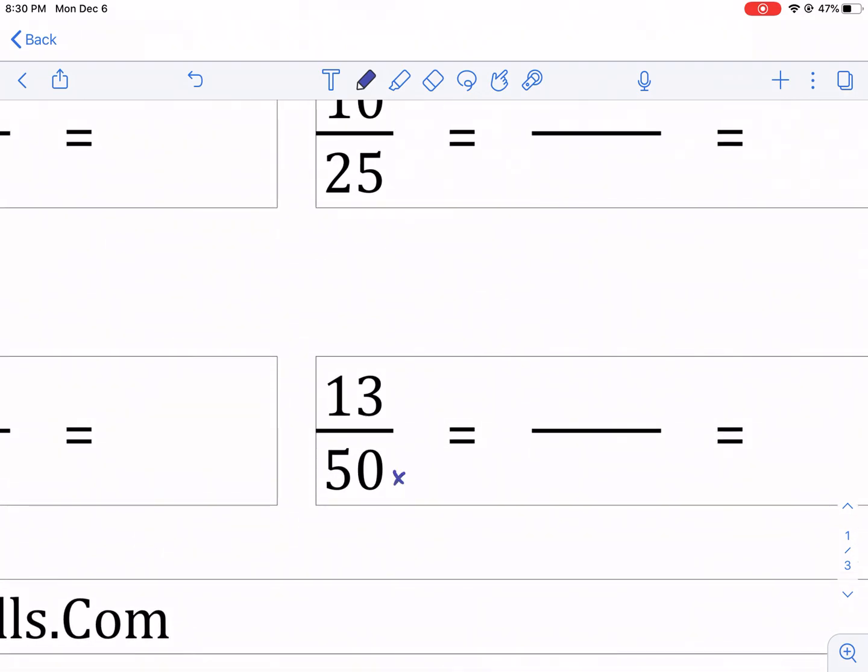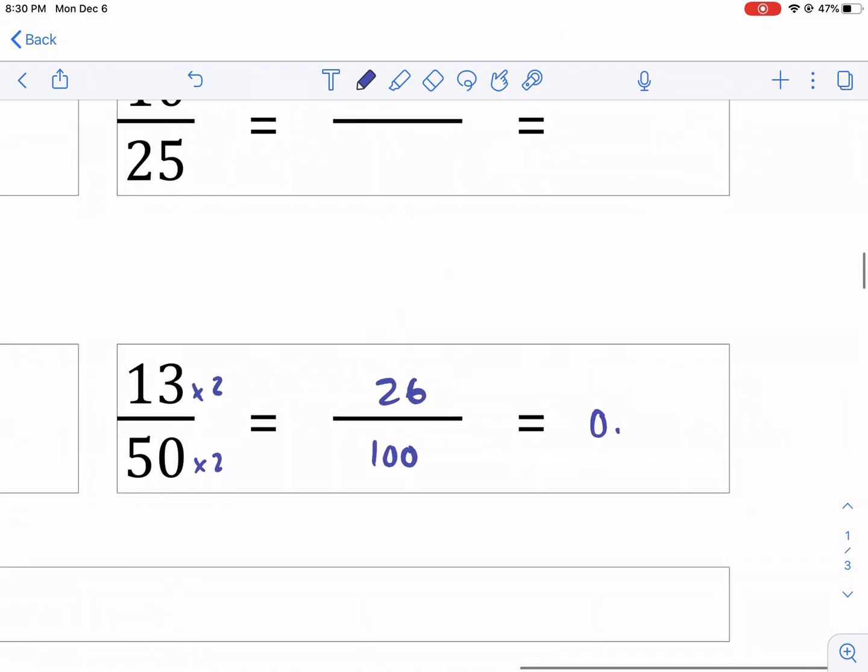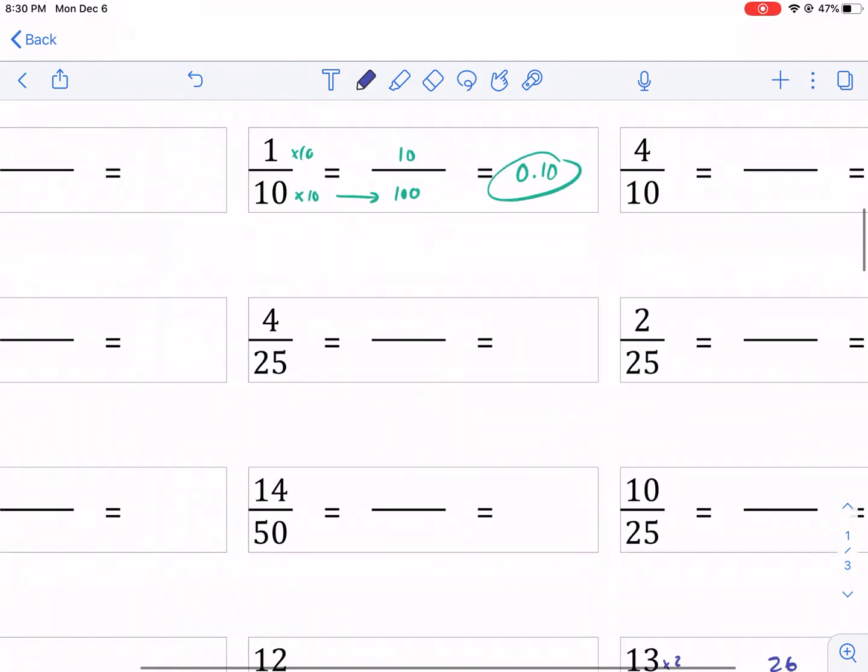Haven't done this one yet. This is going to be times 2. So we get 100 in the base, in the denominator. We have 26 in the top. And 26 hundredths is how you say it. It's as simple as that folks.